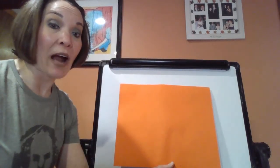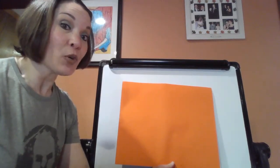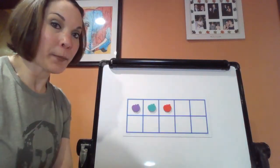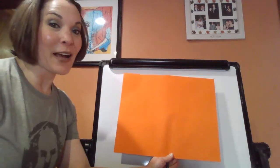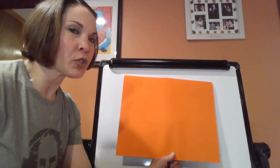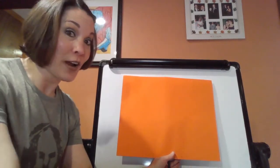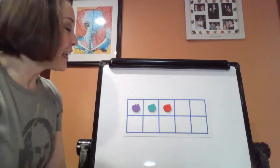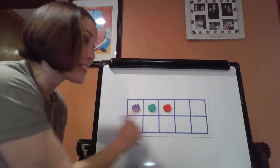Okay, boys and girls, we're back. So here's our first one. I'm going to uncover it, give you a few seconds, and let's see if you know what's in that 10 frame. [brief reveal] Time to cover it back up. I hope you were thinking, counting, subitizing and seeing what is exactly in that 10 frame. I hope you said the number three. Here it is — one, two, three. Notice how it ended in that third box. That's three.